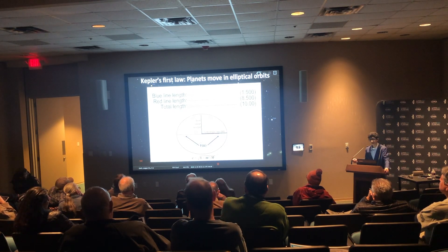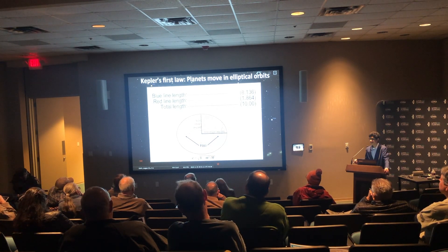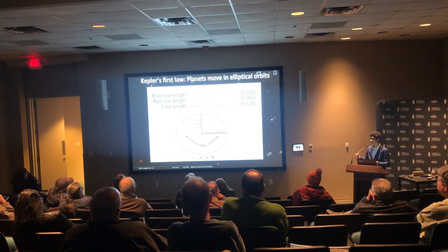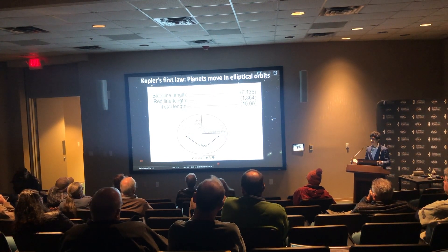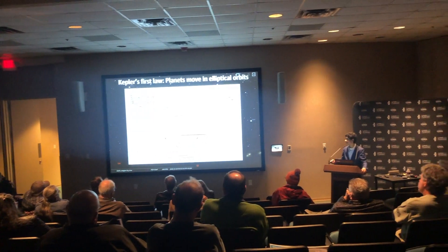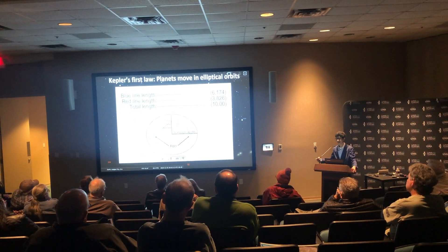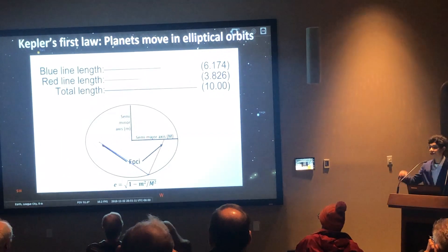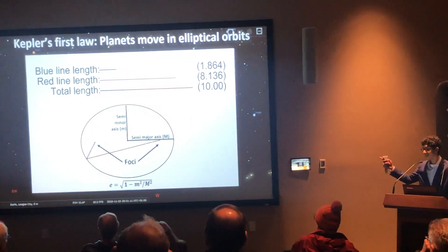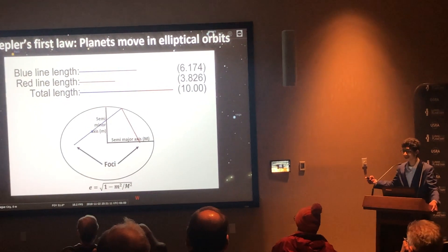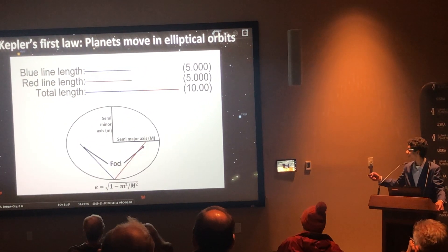There's also an equation for the eccentricity of a planet's orbit. If the eccentricity is zero, then it's just a circle. If it's zero to one, then it's an ellipse. If it's exactly one, it's a parabola and shoots off into space. If it's more than one, it's a hyperbola and also shoots off into space.